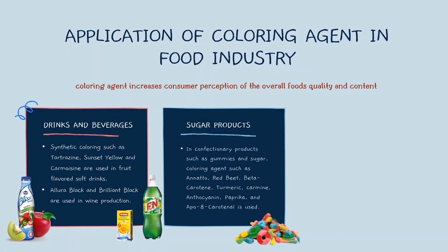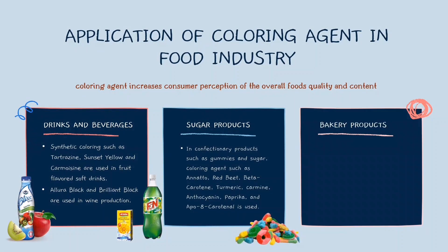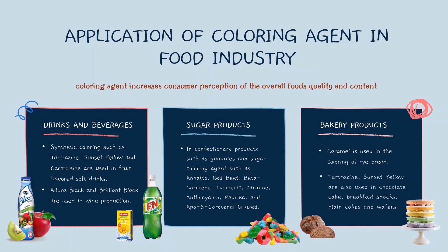The second application is in sugar products. In confectionery products such as gummies and sugar candies, coloring agents such as allura red, beet, beta-carotene, turmeric, carmine, anthocyanin, paprika, and beta-apo-carotenal are used. The third application is in bakery products — caramel is used in the coloring of rye bread, and tartrazine and sunset yellow are also used in chocolate cake, breakfast snacks, plain cakes, and wafers.